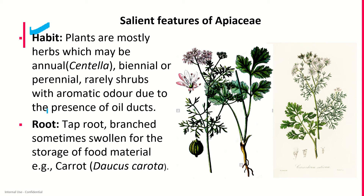The stem is erect or prostrate, climbing in Pseudocarum, with swollen nodes, sometimes ridged, usually fistular, glaucous or glabrous. The leaves are cauline and rameal, radical in young plants of Daucus, usually exstipulate — meaning stipules are absent — though they are stipulate in Centella, where stipules are present.